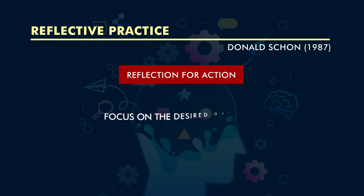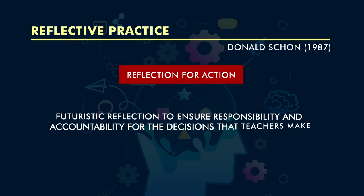Reflection on action is a kind of retrospective process — after taking your class, after coming out from your class, you try to analyze how my class was, whether I was able to achieve the objectives set at the start. When you critically analyze and evaluate your actions which you have already taken, that is called reflection on action. Schön also suggested reflection for action, where teachers or practitioners reflect before the action. Suppose you are going to teach a particular topic and you reflect whether the material or teaching aid will be effective, which method is most suitable. When you reflect before going into class, focusing on desired learning outcomes — a futuristic reflection to ensure accountability for the decisions a teacher makes — that is called reflection for action.